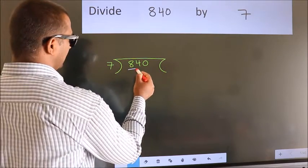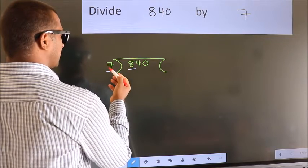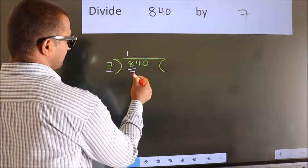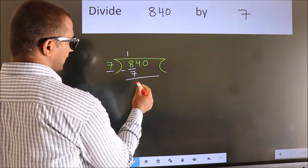Here we have 8, here 7. A number close to 8 in the 7 table is 7 ones, which is 7. Now we subtract and get 1.